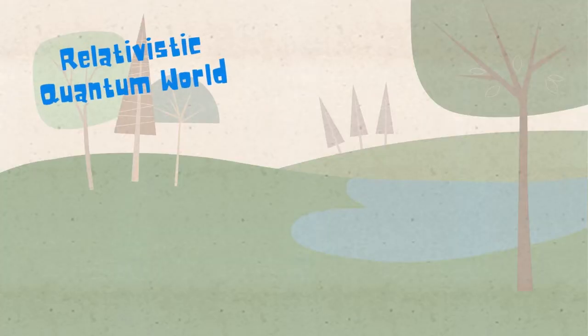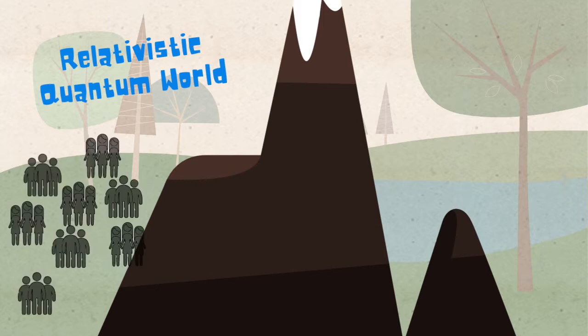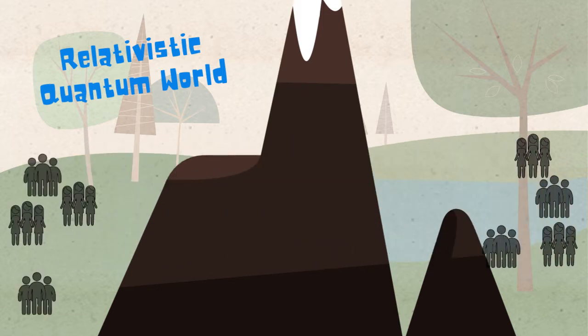Nevertheless, for the Dirac equation, and so in relativistic quantum mechanics, for very high barrier we have that the probability of finding the particle on one side of the barrier or on the other side is more or less the same.